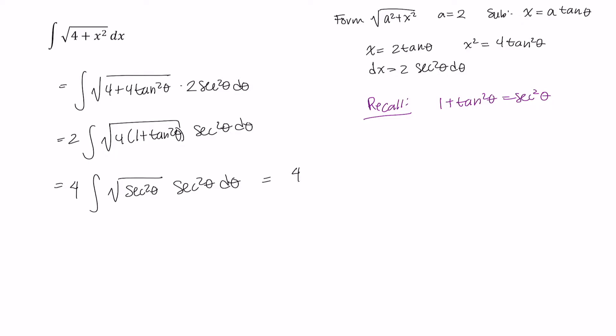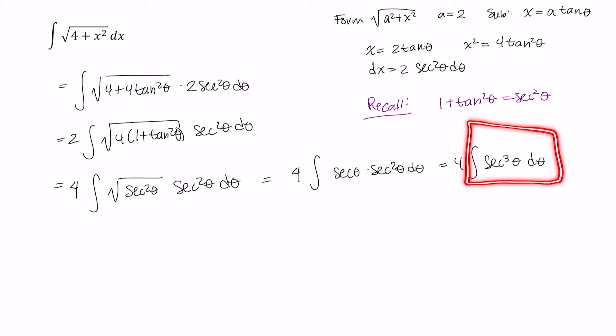This becomes 4 times the integral of secant theta times secant squared theta d theta, which is 4 times the integral of secant cubed theta d theta. If you're following along in my Canvas course, or have been following along this YouTube channel, you've seen that we've already covered how to integrate secant cubed theta.